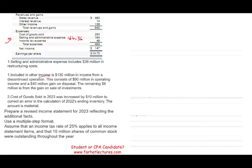Included in other income is $130 million in income from a discontinued operation. In the other income figure of $136 million, $130 million relates to discontinued operation. We need to know that discontinued operations are reported separately, and they must be reported net of tax, which we'll see in a moment.